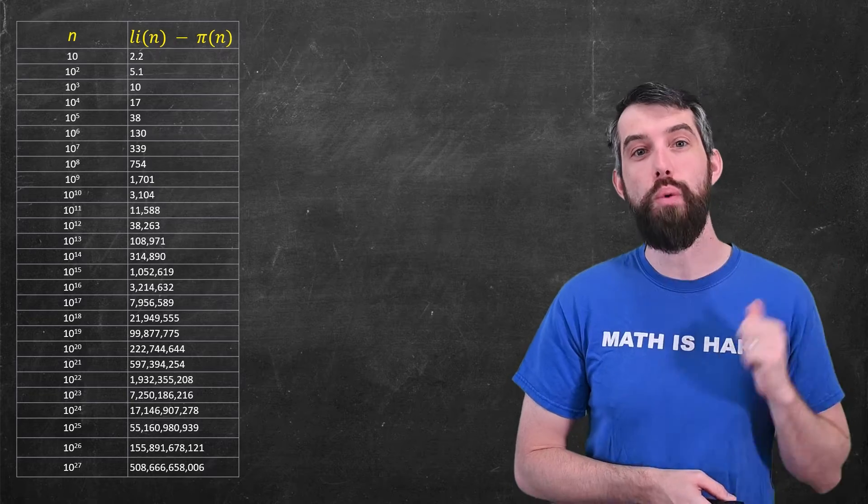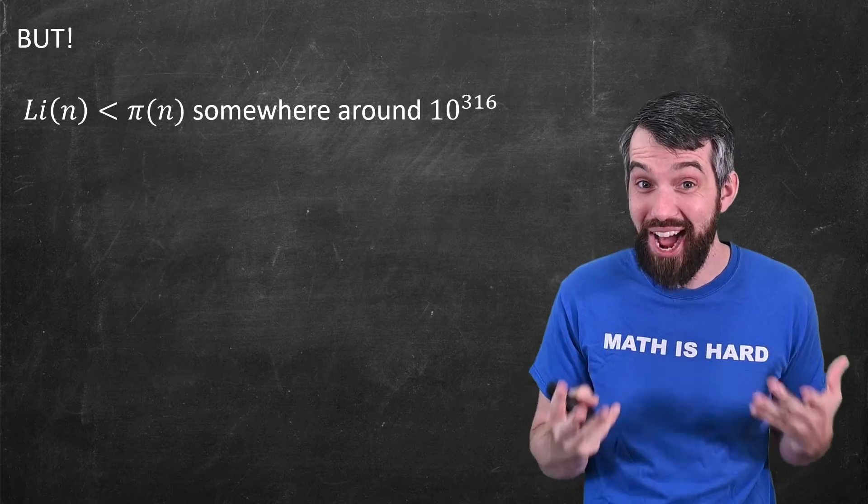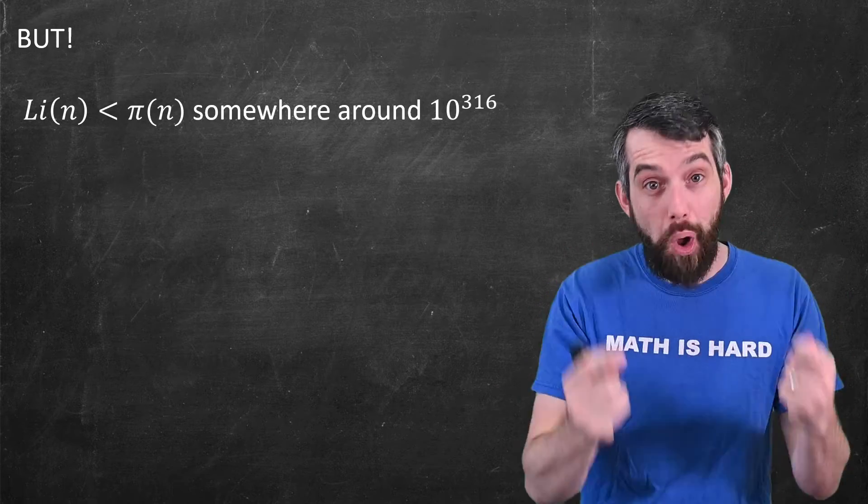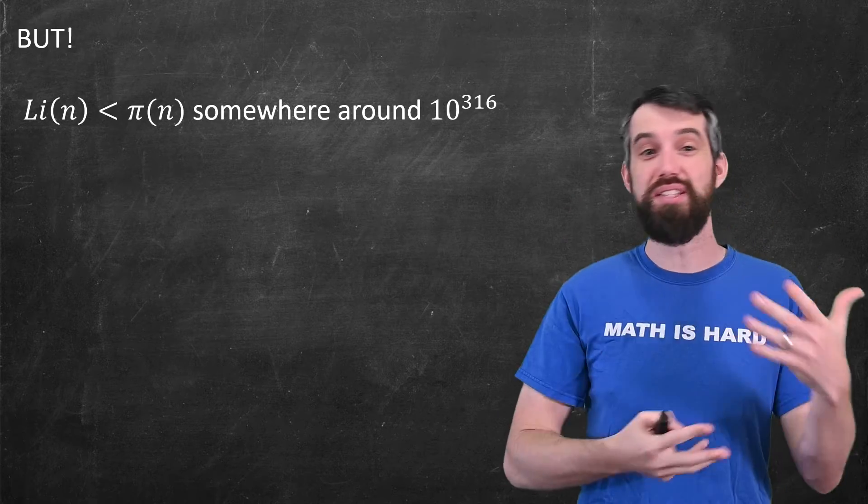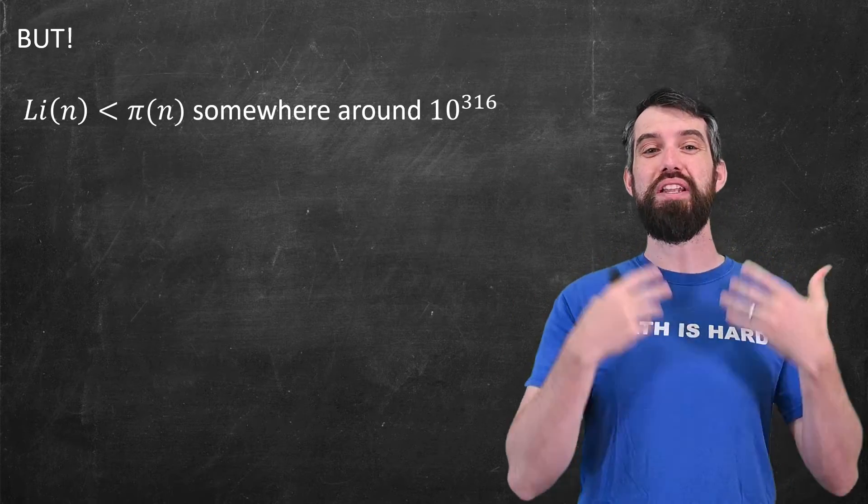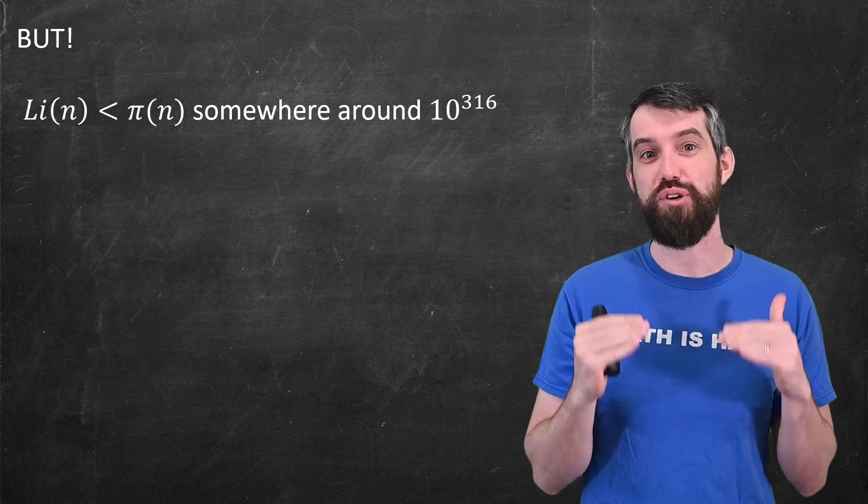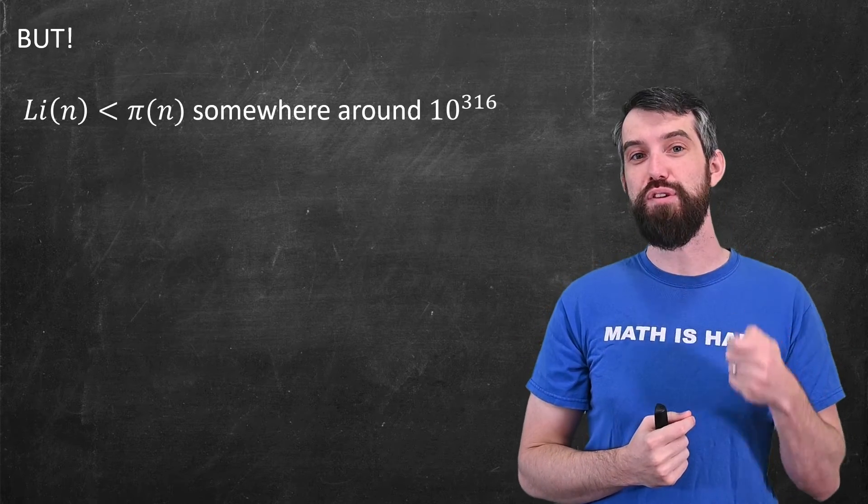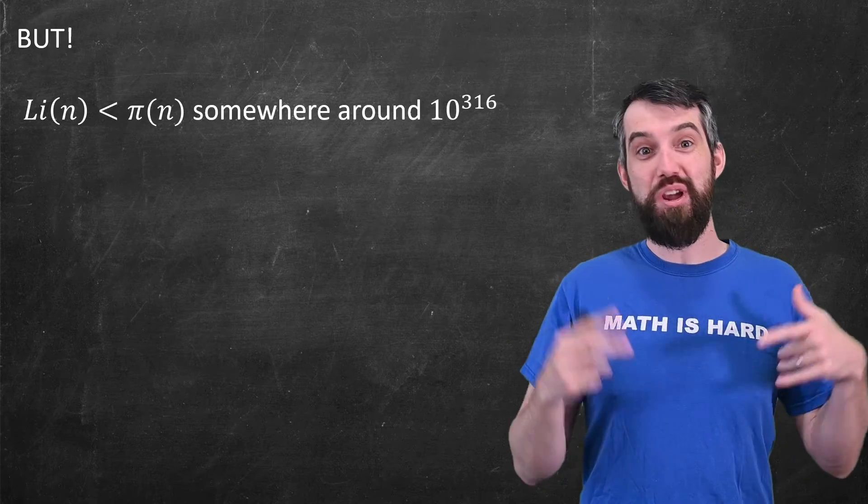And so you might think that this is always true, but it turns out it is not. But we know that somewhere around 10 to the 316th, this outrageously large number, that it crosses. That it's in fact smaller than pi of n. And then indeed it's going to keep on crossing and crossing and crossing forever. This number, as outrageously large as it is, is actually vastly smaller than initial computations at the spot where there was a first crossing. And we don't even know whether this is the first crossing. It may be that someone in the future is able to find a smaller bound when these two functions cross. But we don't know.